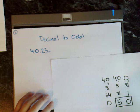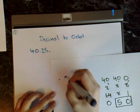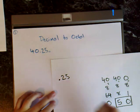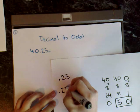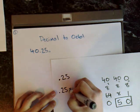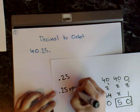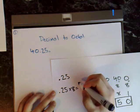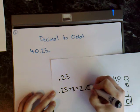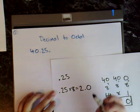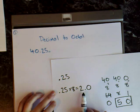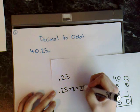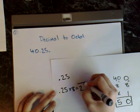Now let's do the fractional part, which is 0.25. We say 0.25 multiplied by 8, and that equals 2.0. Because that fits perfectly with no fractional part, we know to stop there. The part of the answer you take is this 2 here.